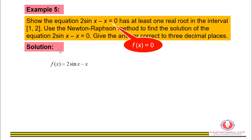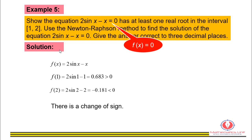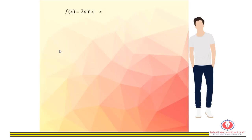First, determine f(x): f(x) is the expression on the left side of the equation equal to zero. Substituting x = 1 gives f(1) = 0.683, which is greater than zero. Substituting x = 2 gives f(2) = −0.181, which is less than zero. There is a change of sign, therefore there is at least one real root in the closed interval [1, 2].